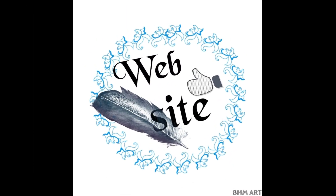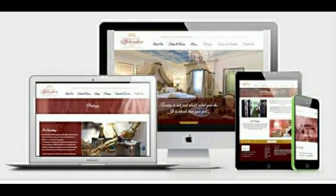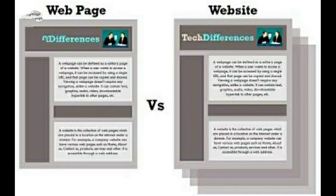Ab baat karte hain: website kya hai? A location on a net server is called a website. Matlab agar koi server ki location jo aapko batata hai, wahi aapki website hoti hai. Dusri taraf se define karein to, the collection of web pages is also called a website. Web pages ka collection hi aapka website hota hai. Single document is a web page, and the collection is a website.